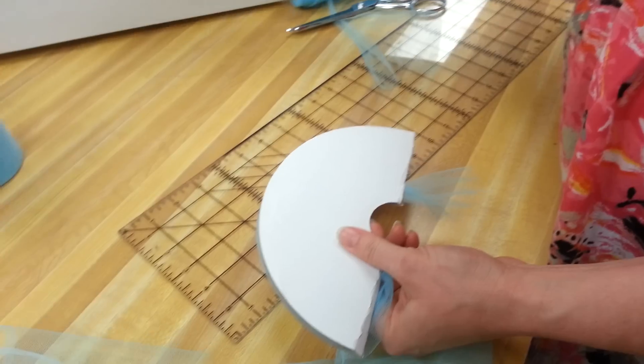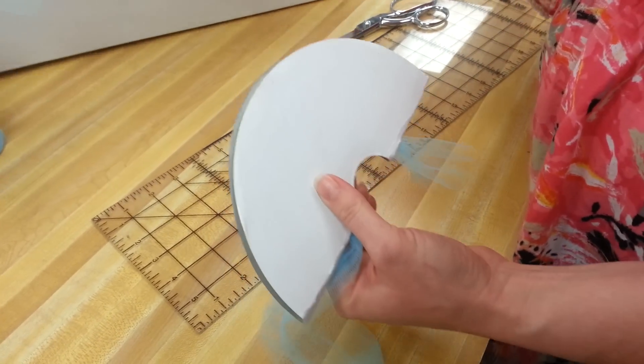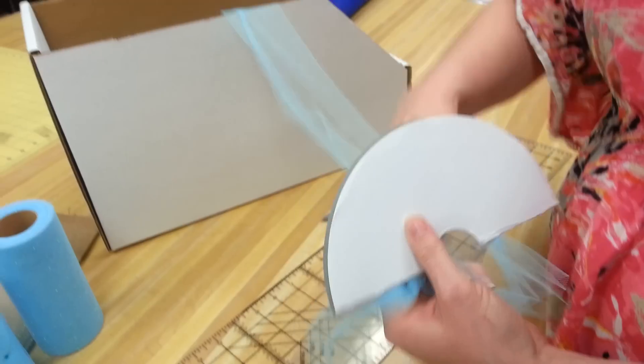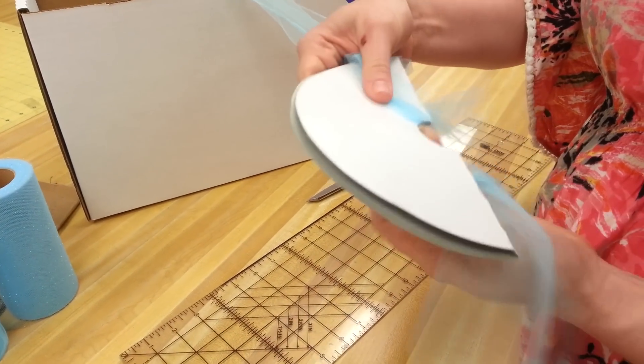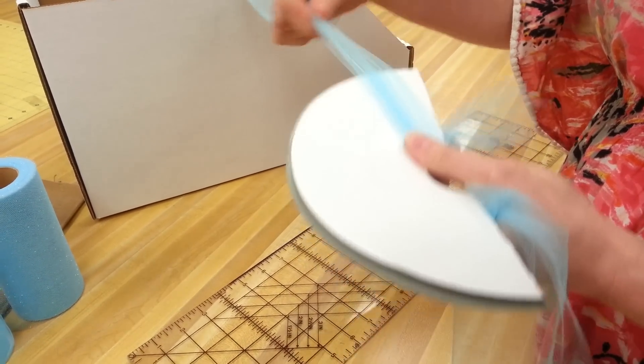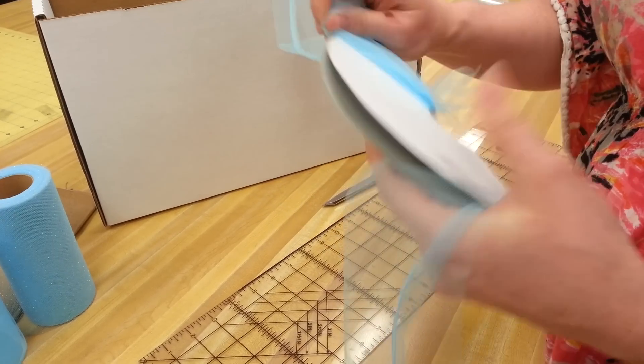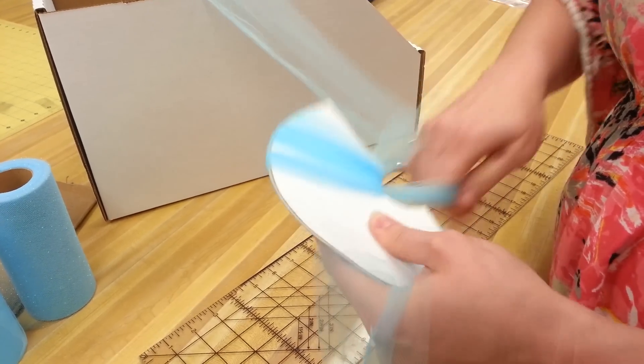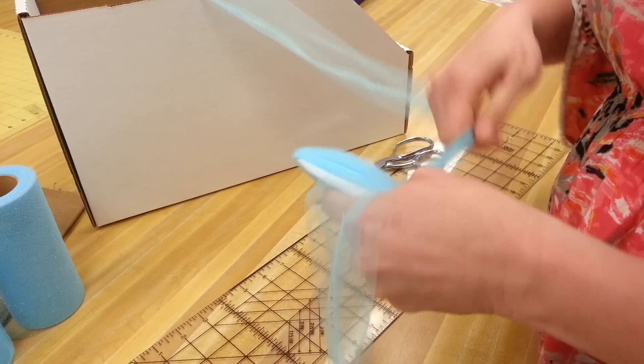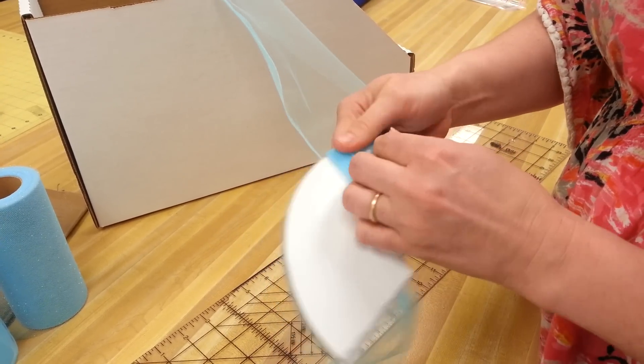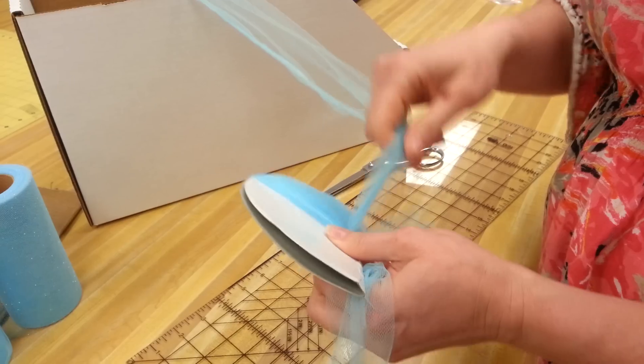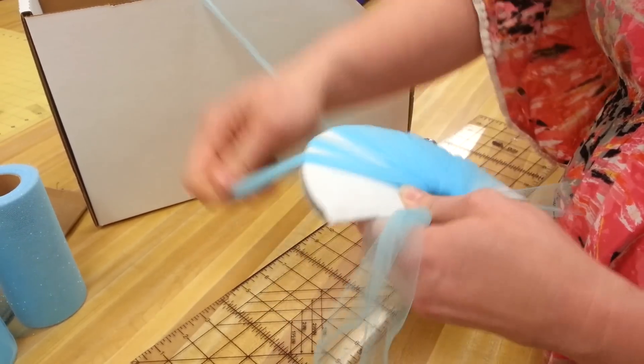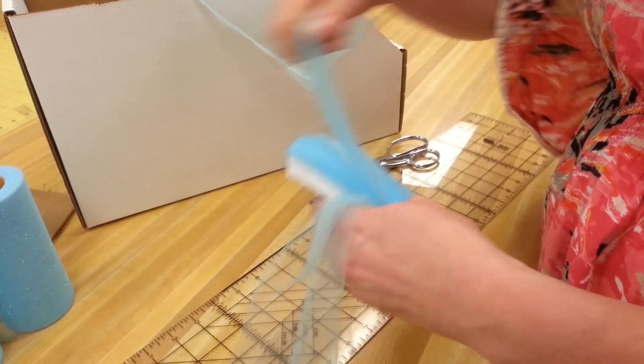All right, now I just throw my tulle in something that will contain it and I'm just going to start. So we said 16 times and we have to go all the way across. So 1, 2, 3, 4, 5, 6, 7, 8. It's always good if you're halfway when you've done the 8 or the halfway point. 1, 2, 3, 4, 5, 6, 7, 8.